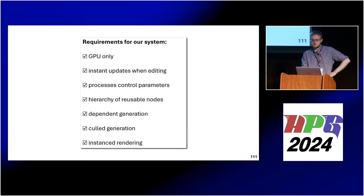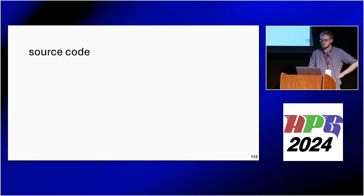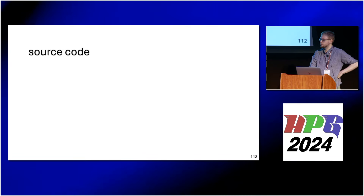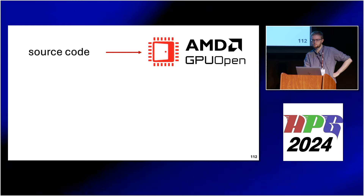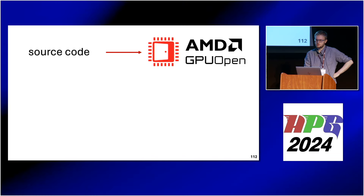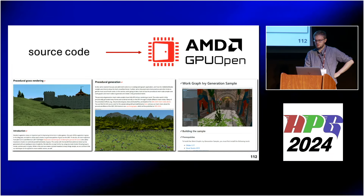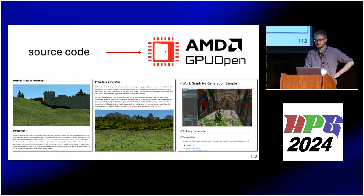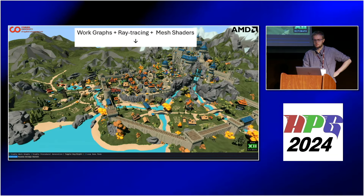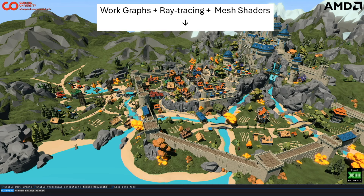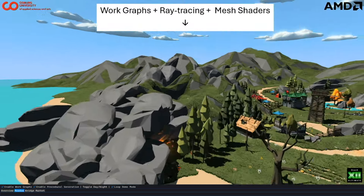Source code is and will be available on GPU Open — we've already published most parts of it, so take a look. In conclusion: WorkGraphs plus ray tracing plus mesh shaders equals cool scenes. Thank you for your attention.